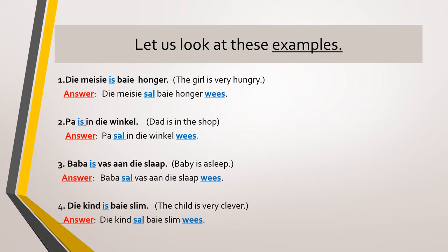Number two: pa es endi vengkel. Pa sal endi vengkel vers. Number four: di kent is baya honger vers. Di kent sal baya honger vers. In all of these sentences, sal took the place of is and we put vengkel at the end of the sentence.